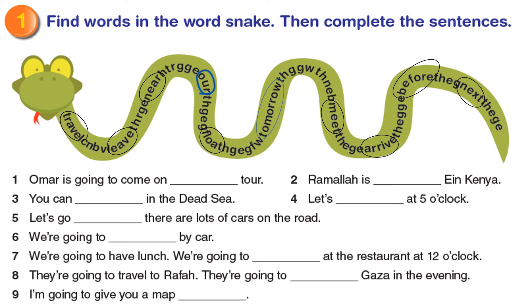Now we are going to use these words to complete the sentences. For example, number one: Umar is going to come on tour — he is going to come on our tour. Now you have 5 minutes to complete the sentences.